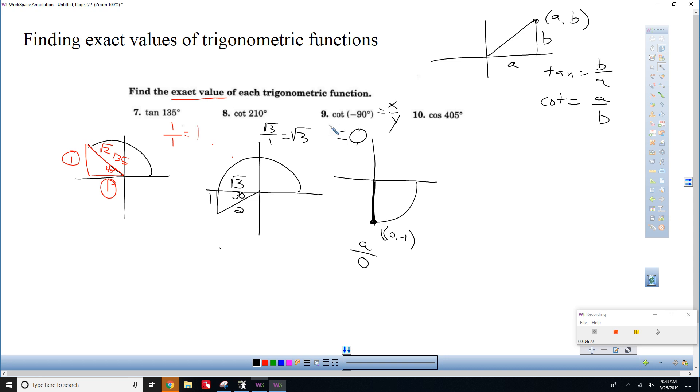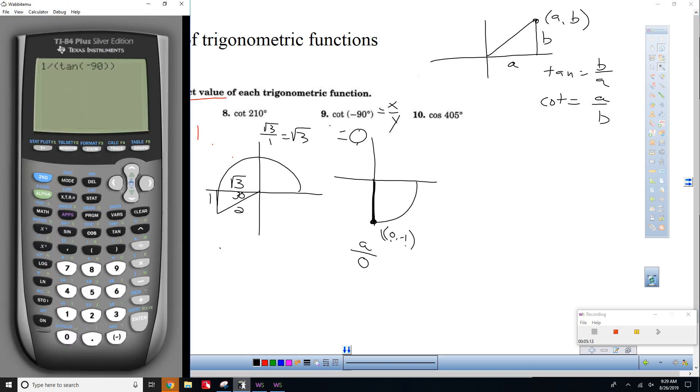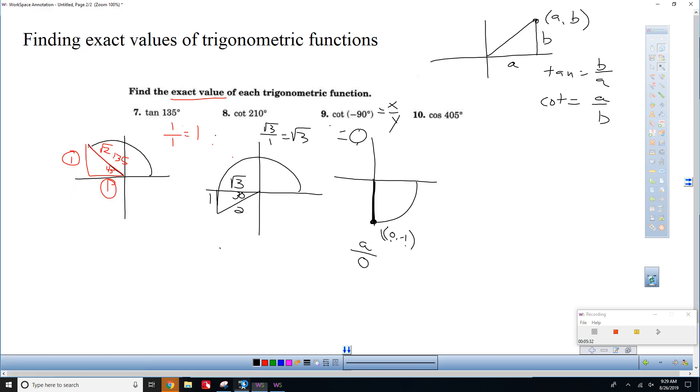And that's because if you do adjacent over opposite, it's 0 divided by negative 1, which is 0. The reason that the calculator won't do that for us is that the tangent of negative 90 is undefined. And according to your calculator, 1 divided by undefined is still undefined. So this just shows you that you can't always use your calculator to do these, which is really the point. We're doing the exact value. We have to do them by hand.